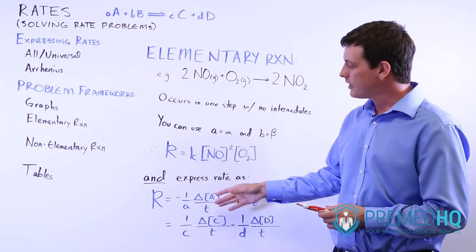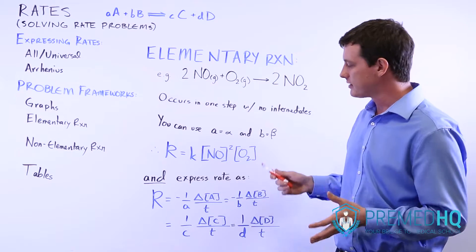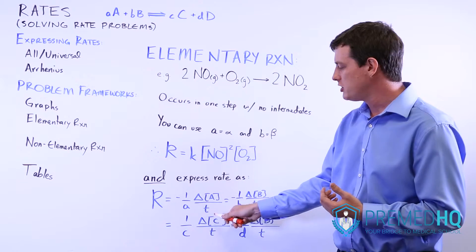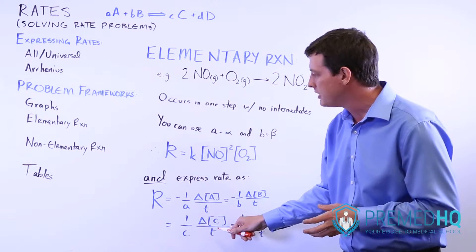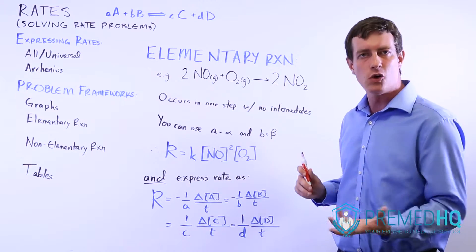Be aware that this rate is the same as this rate. You could express something as one over lowercase C times the change in concentration of C over time. You could express that as being equal to K times the reactants over time.